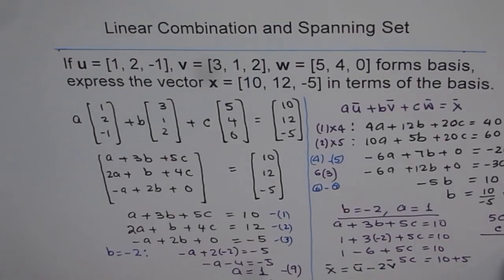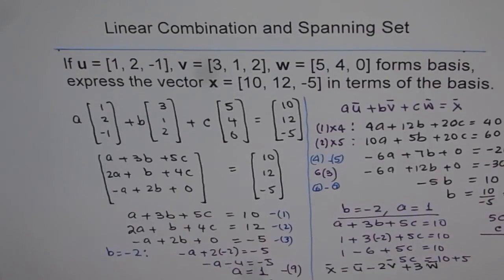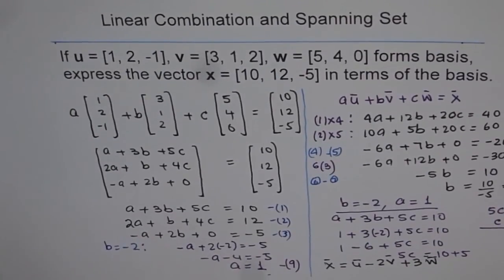And C is 3 for us. Plus 3W. So that is the final answer. So that is how you can get linear combination of your vectors.